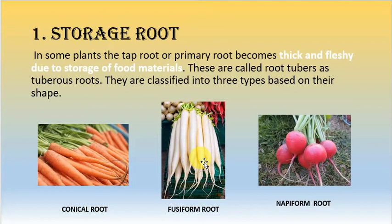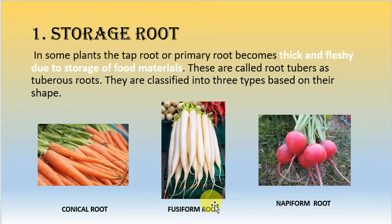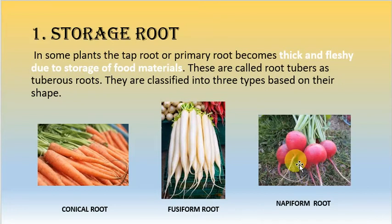Depending on its shape, storage roots are divided into three types: conical, fusiform, and napiform. The conical root is thick and fleshy at the base and thin towards the tip. The fusiform root is thin at both the base and tip, with only the middle portion thick and fleshy. The napiform root has a bulgy, thick and fleshy base while the tip is long and thin, tapering towards the end.